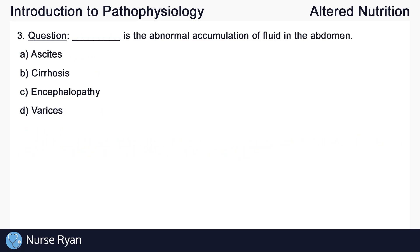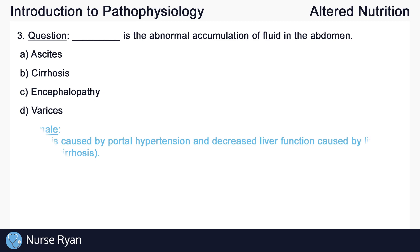Question number three: blank is the abnormal accumulation of fluid in the abdomen. The answer is A, ascites. Ascites is caused by portal hypertension and decreased liver function, caused by liver scarring or cirrhosis.